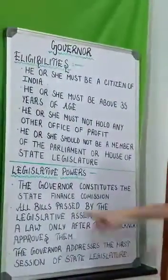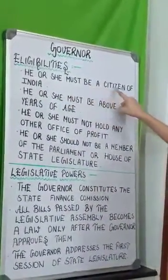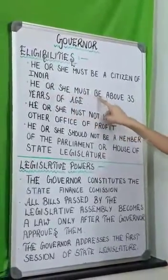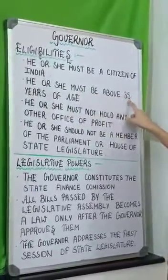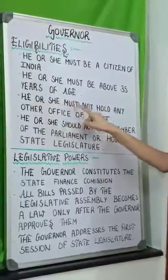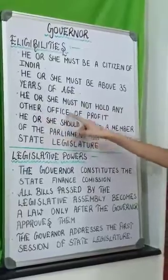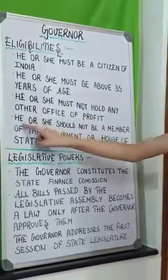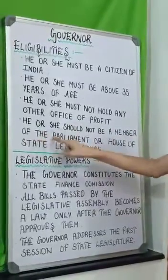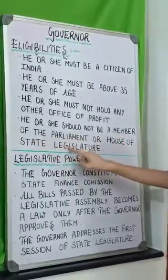Eligibilities of a Governor: He or she must be a citizen of India. He or she must be above 35 years of age. He or she must not hold any other office of profit. He or she should not be a member of the Parliament or House of State Legislature.